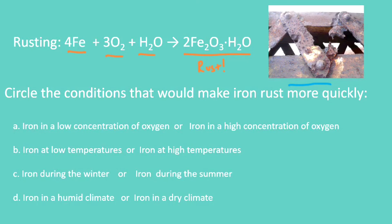So the first question says: iron in a low concentration of oxygen or iron in a high concentration of oxygen? And remember, we've learned that increasing the concentration of our reactants increases the rate, so here is where we would run that reaction more quickly. The second question asks: iron at low temperatures or iron at high temperatures? Again, we've learned that high temperatures increase the rate of reaction, and so the high temperatures are going to rust more quickly.